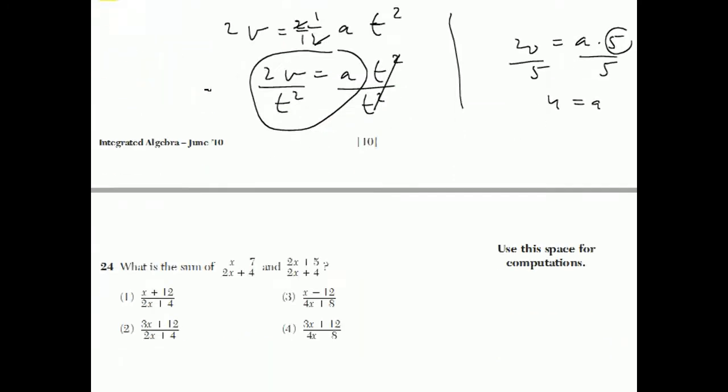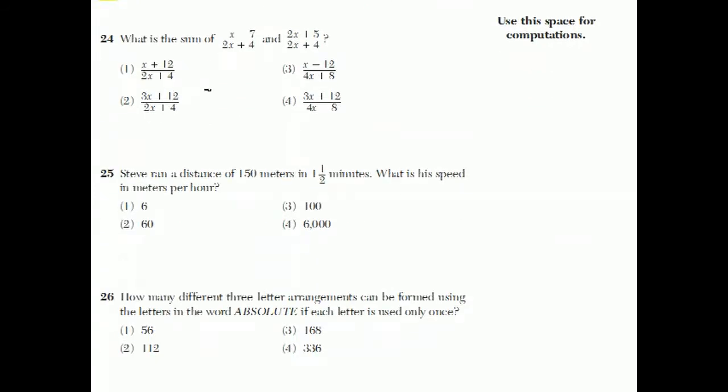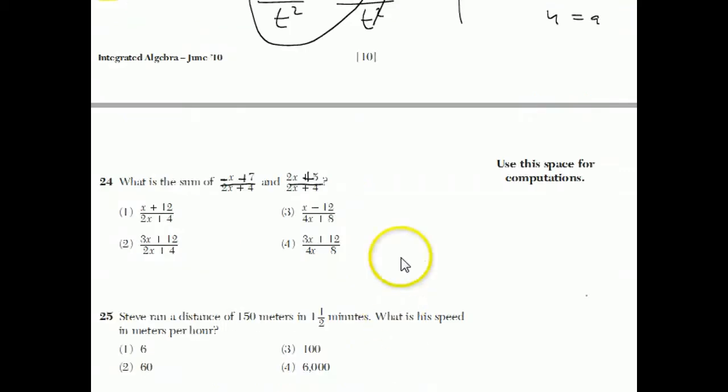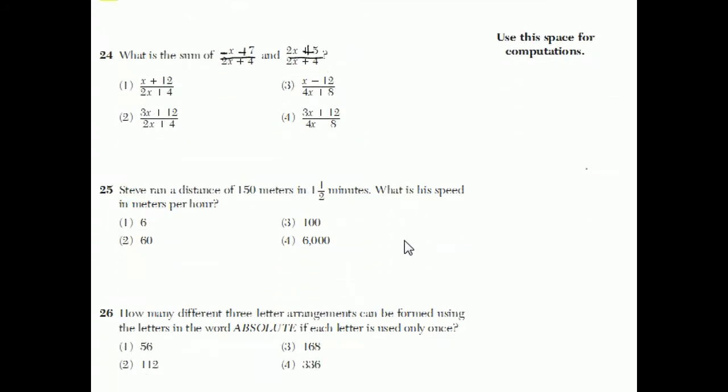Question number 24. What is the sum of negative x plus 7 over 2x plus 4 and 2x plus 5 over 2x plus 4? Well, the thing to realize about this question is that these two fractions have the exact same denominator. And just like when the denominator is just a regular number and we look for common denominators, same thing happens with adding fractions. So, this becomes just adding the numerators together: minus x plus 7 plus 2x plus 5.